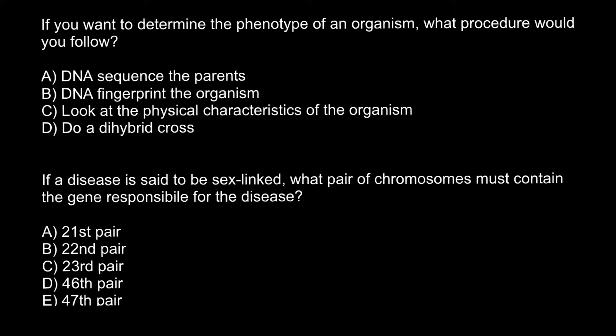Here's the first question: if you want to determine the phenotype of an organism, what procedure would you follow? There are four answers to choose from. Answer A — DNA sequence of the parents — would be impractical, because when an organism inherits a diploid organism, like we humans, we inherit only half of the genes from each parent, so it's not guaranteed that we would find the same alleles in the progeny. So we can cross out this answer.